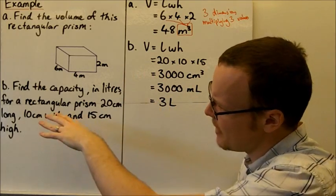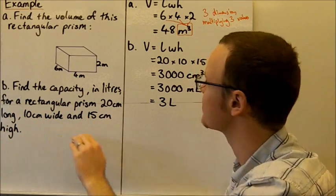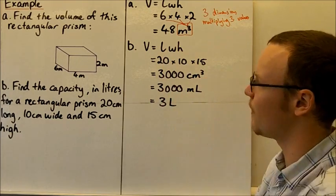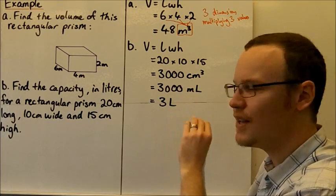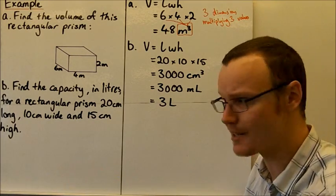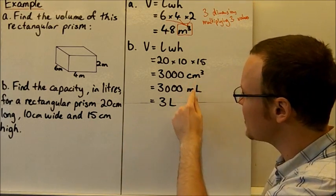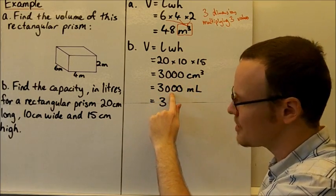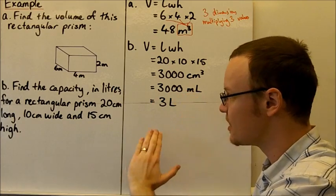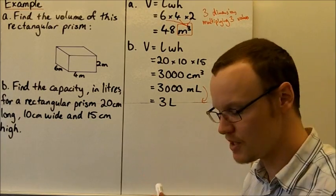For part B, find the capacity in litres of a rectangular prism that is 20 centimetres long, 10 centimetres wide, and 15 centimetres high. Substituting into the formula: 20 times 10 times 15 equals 3,000 cubic centimetres. Since one cubic centimetre equals one millilitre, 3,000 cubic centimetres equals 3,000 millilitres. Dividing by 1,000 to convert to litres gives a final answer of 3 litres.